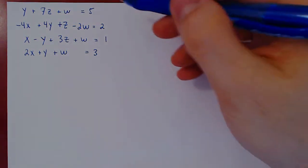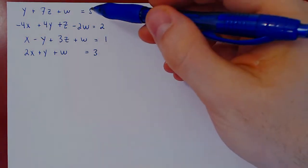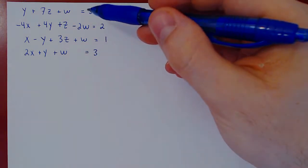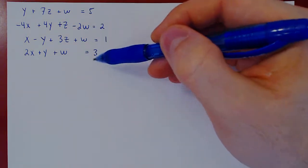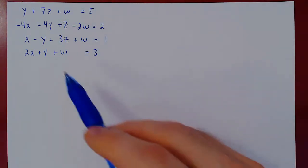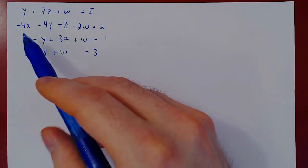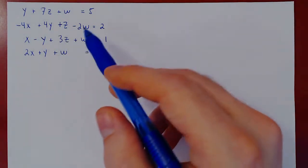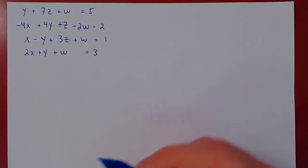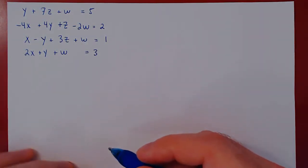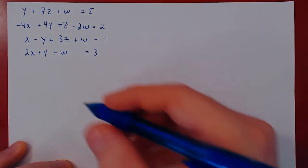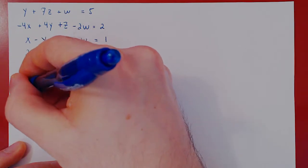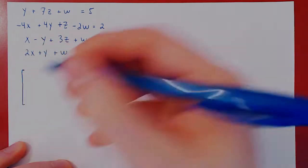In this video, we will solve a linear system that consists of four equations and four variables: x, y, z, and w. As always, the first step is to construct the corresponding augmented matrix.